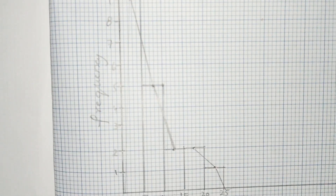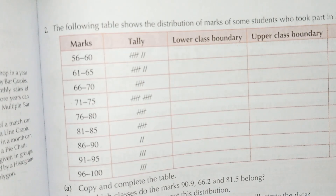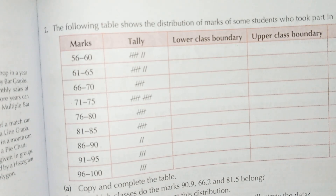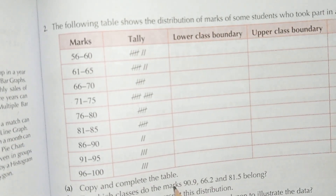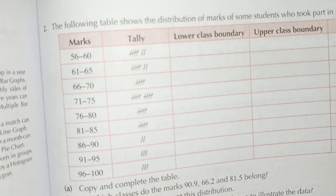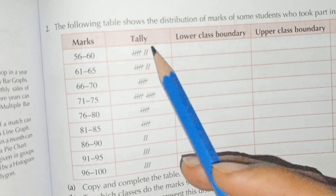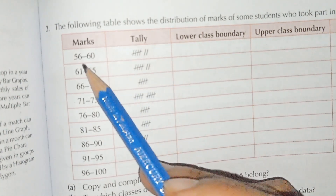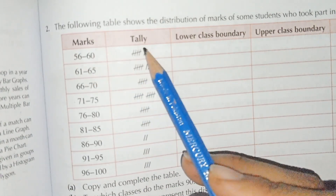This is the frequency polygon drawn on the histogram diagram as required. Question one is now solved. Question two: the following table shows the distribution of marks of some students who took part in a science quiz. In part (a), we have to copy and complete the table. These are the marks — for example, 56 to 60 — and these are the tallies showing which students got those marks.